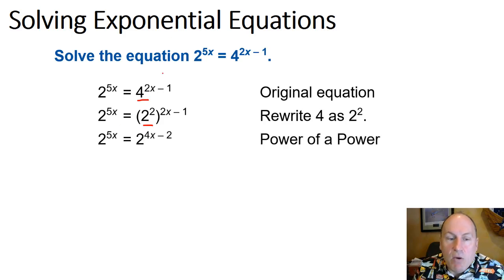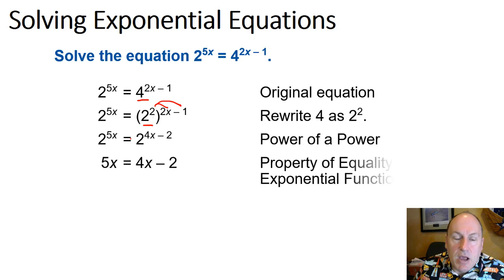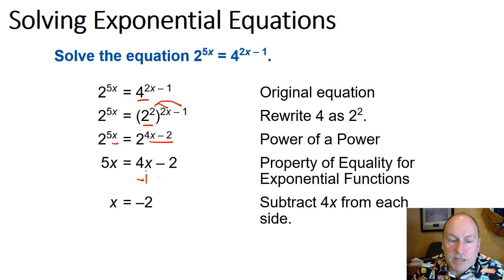Using the power-of-a-power property, 2 to the 2nd raised to the 2x minus 1 equals 2 to the quantity 2 times (2x minus 1). We distribute that 2 to both the 2x and the negative 1, giving us 2 to the 4x minus 2 on the right-hand side. Since the bases are the same, we set the powers equal: 5x equals 4x minus 2. Subtracting 4x from both sides gives x equals negative 2.